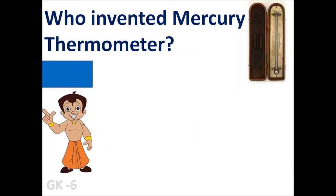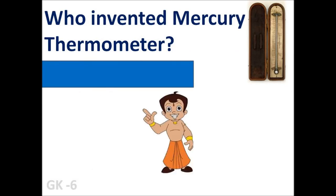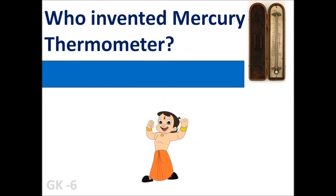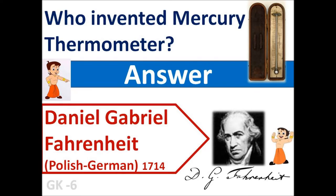Who invented the mercury thermometer? The answer is Daniel Gabriel Fahrenheit from Germany.